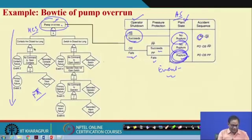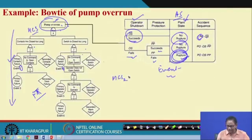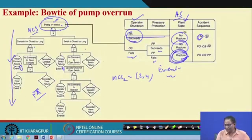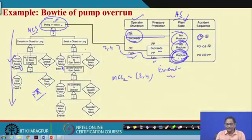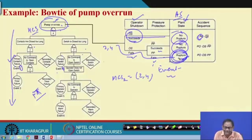The accident path would be: suppose event 2 and event 4 occur — those would form MCS 2. So events 2 and 4 together along this path lead to no rupture; but 2 and 4 along the other path lead to rupture. That means: events 2 and 4 occur, operator shutdown fails, and the protection measure relief valve also fails — then rupture takes place. So event 2, event 4, operator shutdown failure, and pressure protection failure are all independent events and are multiplied to give the accident sequence probability.